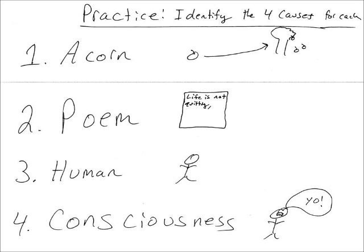Notice all living things have something they're striving to be. Now, they aren't consciously striving to be something; rather, you could think of it as what's in their blueprint or DNA or genetic code. The acorn is on the path of acorn tree-ness. When it actualizes its potential within itself, it will become an acorn tree that produces more acorns. That's what we mean by the formal cause.